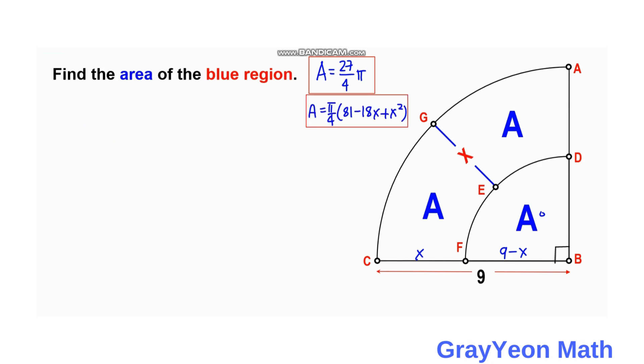So next is we equate the two equations. So A being equal to A. And we have found two expressions or values for A. So the one is pi over 4 times 81 minus 18X plus X squared equals 27 over 4 times pi. We can cancel this pi and this pi and this 4.